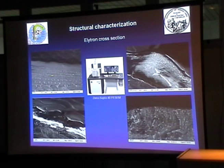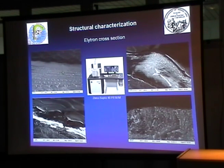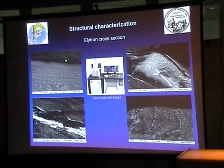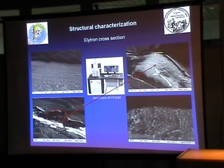Here is a closer view of the elytron cross-section where you can see layers of different kinds: one with a particular structure and another that is almost homogeneous. The layers here are not just air and chitin but chitin and melanin — two different substances. You can also see the bars on the top surface as before. A zoomed view clearly shows the thin multilayers that are responsible for the color.